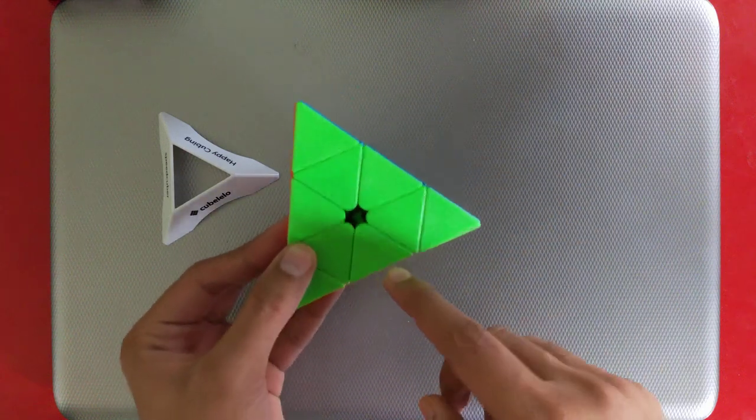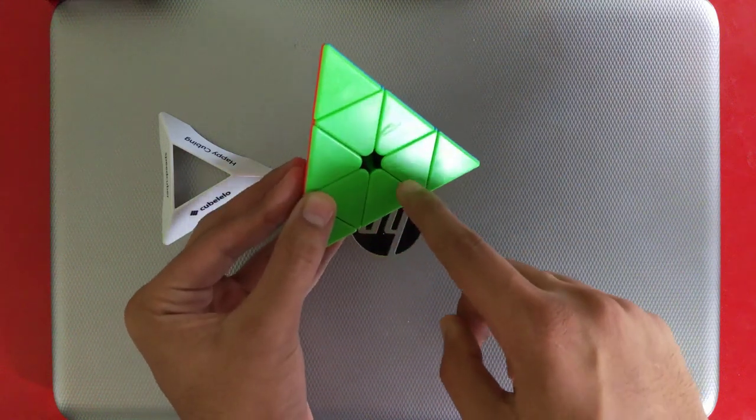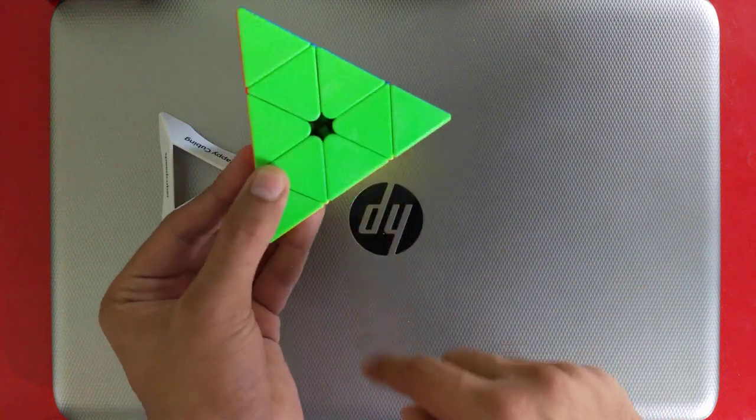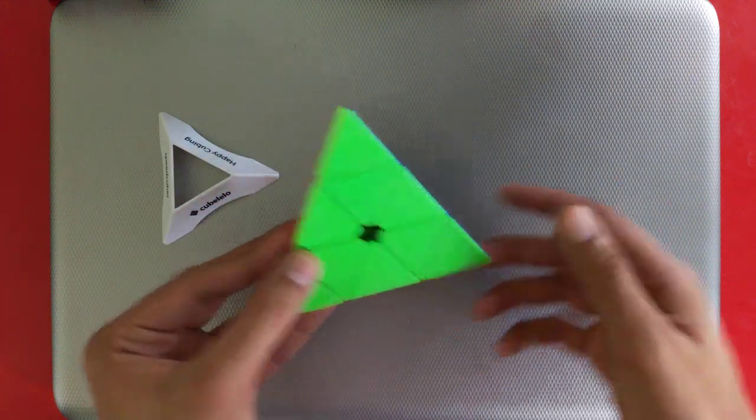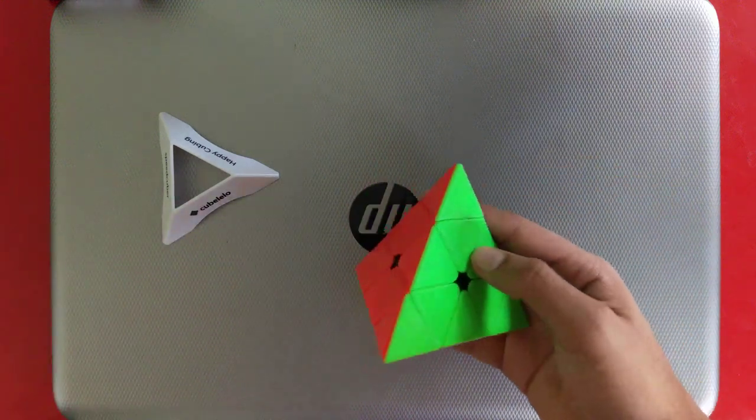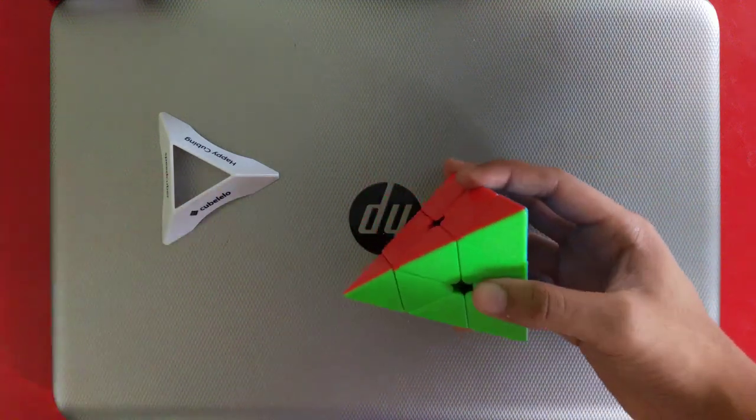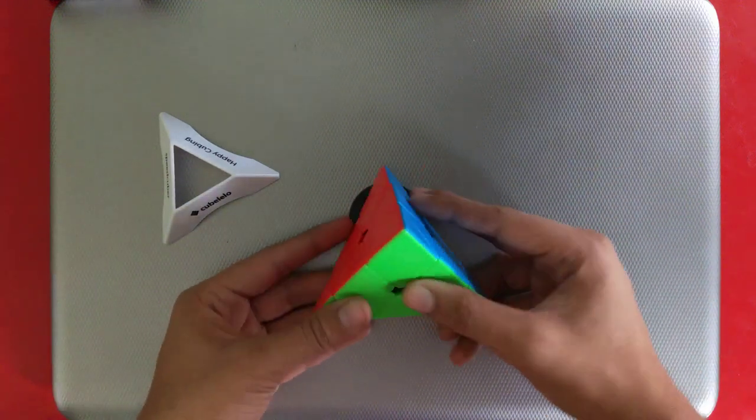But I can see, it's not visible in the camera, but here are some scratches. I think CubeLelo may have given a used or scratched one, but it's fine.